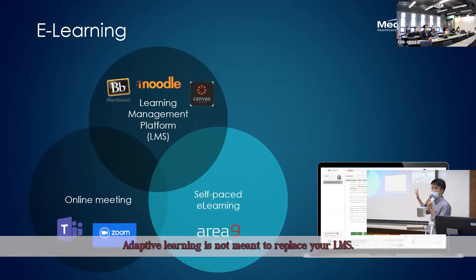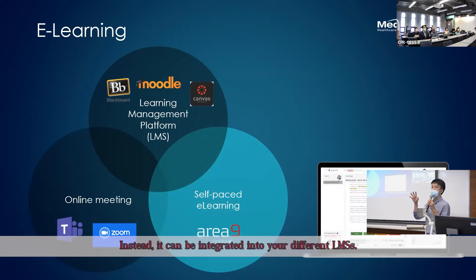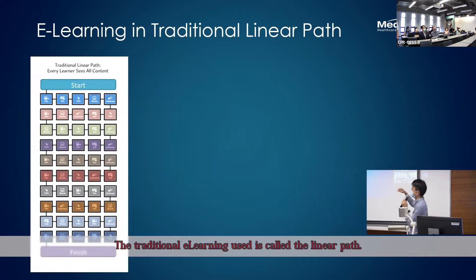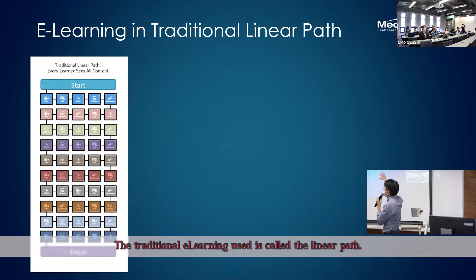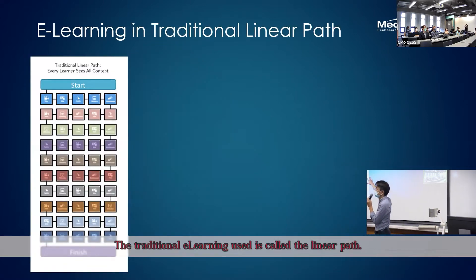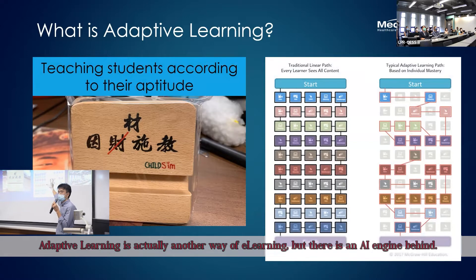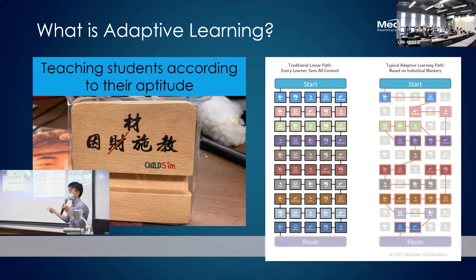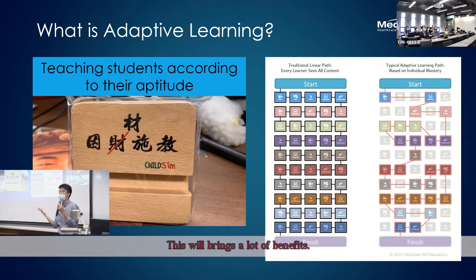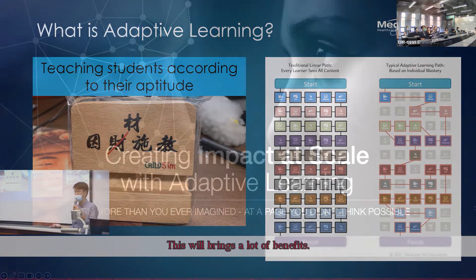Adaptive learning is not to replace your LMS. In return, it can integrate with your different LMS. The traditional e-learning we call is a linear path. Adaptive learning is actually another way of e-learning — there's an AI engine behind it, so it brings a lot of benefits.